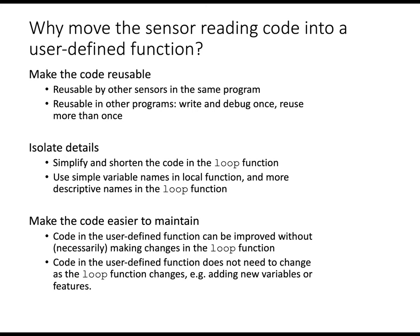Now we're going to modify that code. We're going to make it more reusable by moving the sensor reading code into a user-defined function. That will make it usable by other sensors in the same program. And later we will introduce a temperature measurement that uses the same code. And we can also reuse it in other programs. So once we write this and debug it, we can use the function as a module in other Arduino projects. The other benefit is that it isolates the details. The code in the loop function gets simpler. And the variables chosen in the loop function can make sense just in the loop function. We don't have to, the variables aren't shared with this user-defined function.